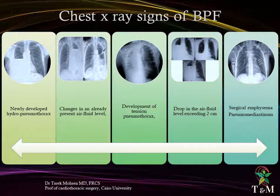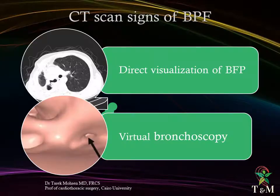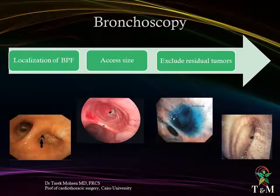Signs of bronchopleural fistula on chest X-ray include newly developed hydropneumothorax, changes in existing air-fluid levels, development of tension pneumothorax, drop in air-fluid levels exceeding 2 centimeters, surgical emphysema, and pneumomediastinum. CT scan offers direct visualization at sagittal and coronal cuts as well as during virtual bronchoscopy reconstruction of the tracheo-bronchial tree. Fiber optic bronchoscopy can be both diagnostic and therapeutic — helping in localization, confirmation, size assessment, exclusion of residual mass or granulation tissue, and visualization of retained sutures.